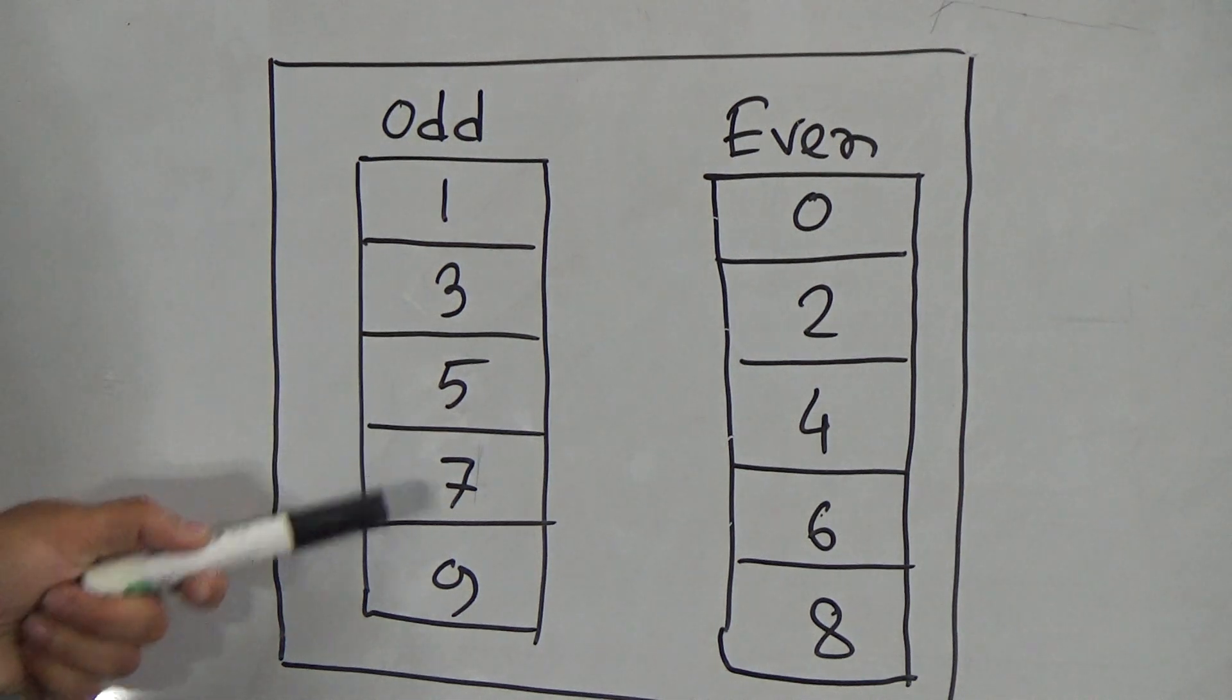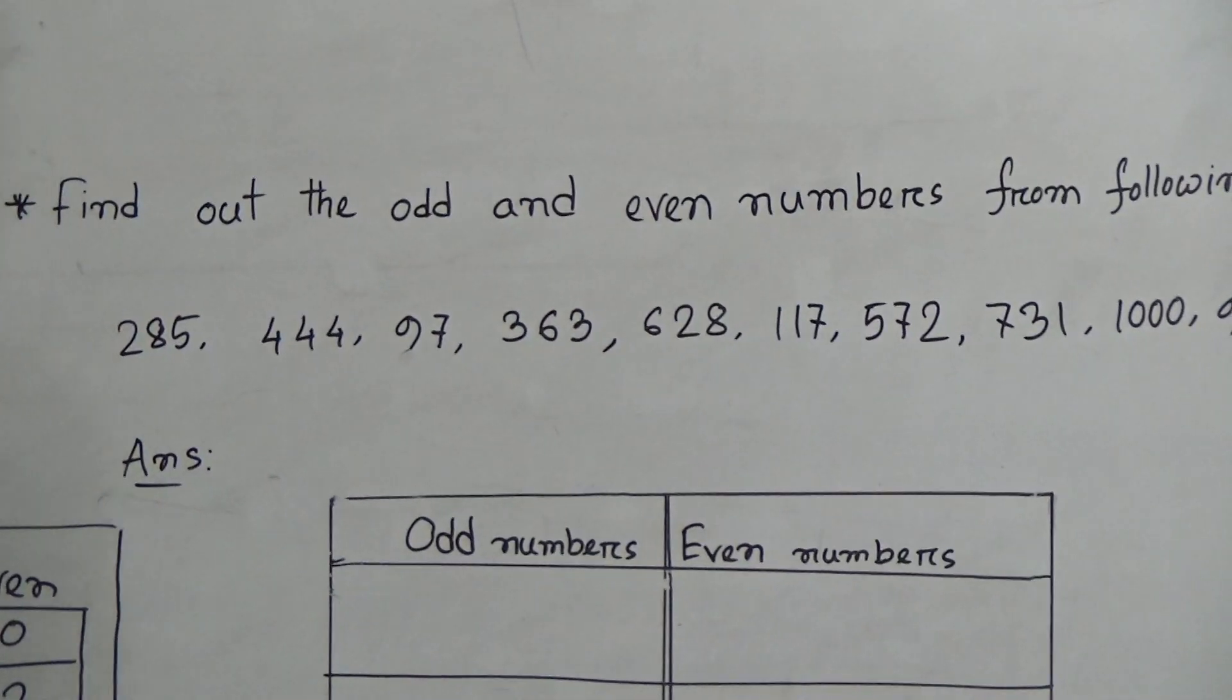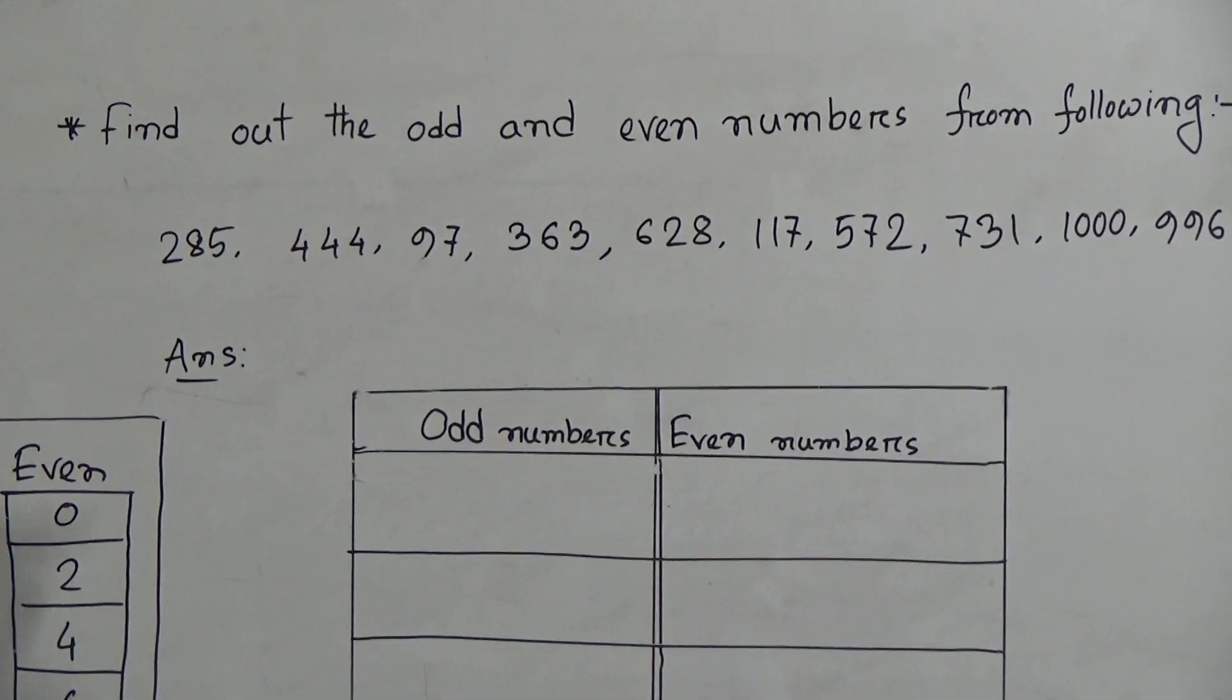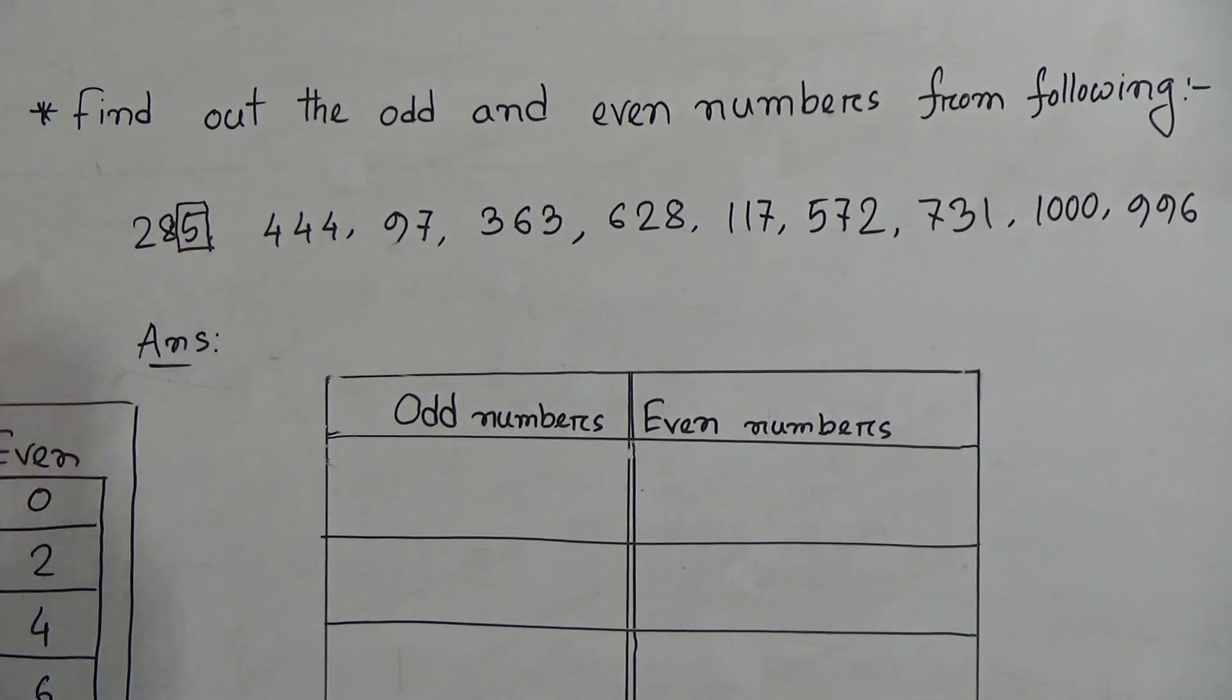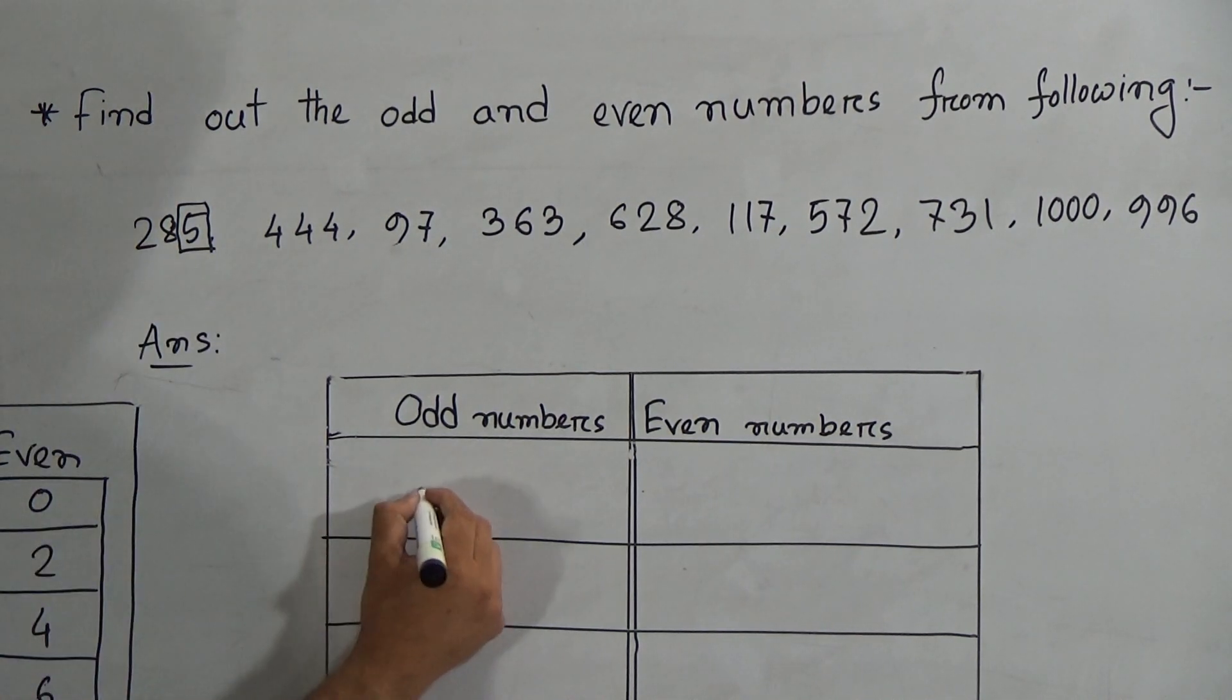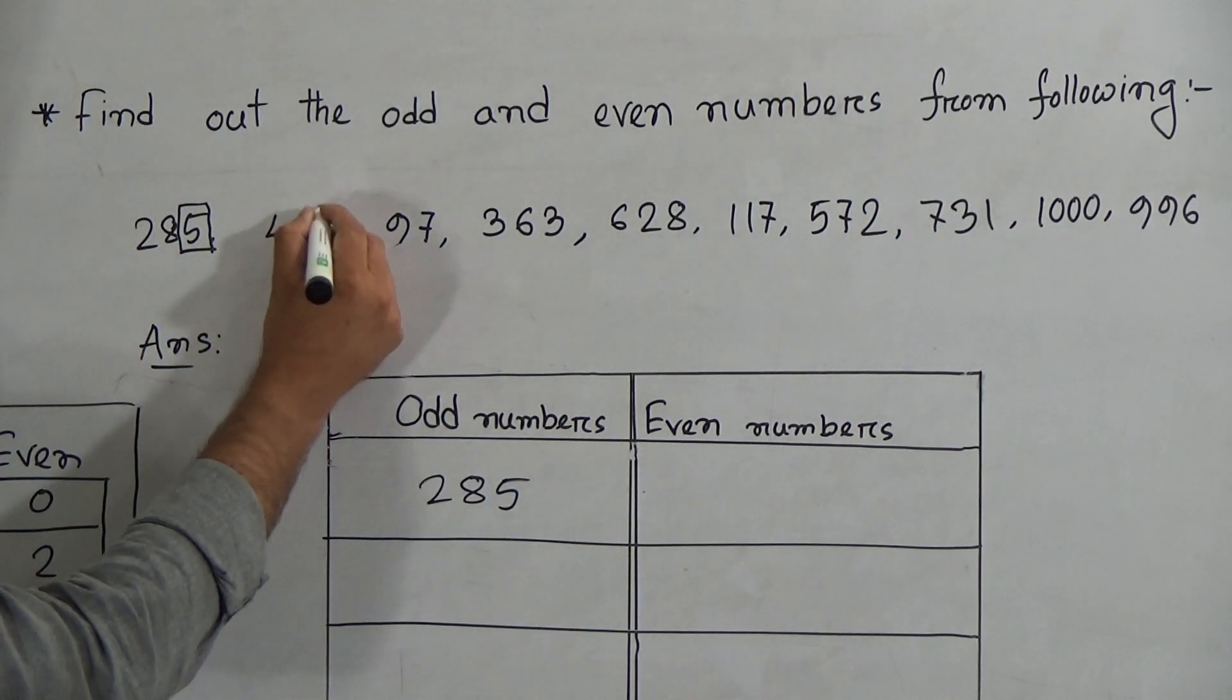Now there is a question: find out the odd and even numbers from the following. First number is 285. First of all, we have to look at the last digit of the number. Here it is 5, so 5 is the symbol of an odd number. So 285 is an odd number.